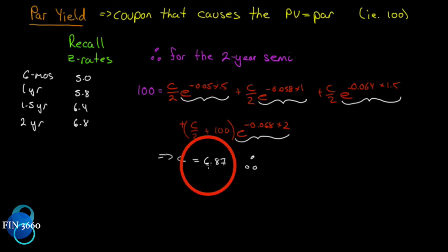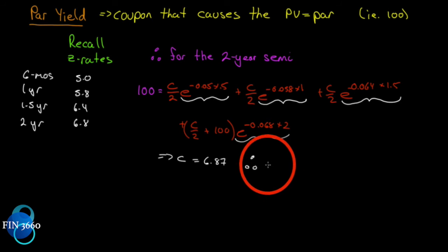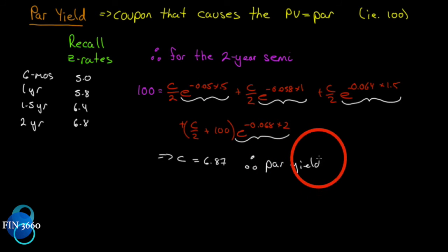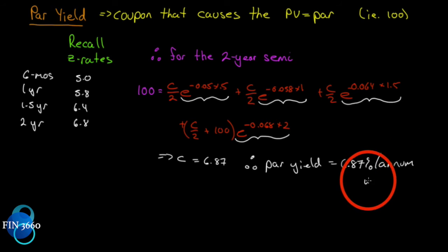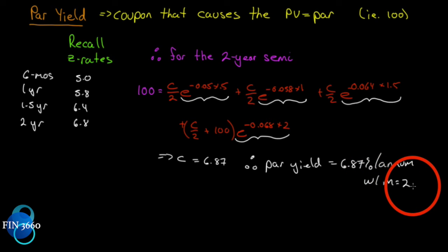So C is 6.87 per year, divided by two for semi-annual. The par yield is 6.87% per annum with m equal to 2. Note that's not continuously compounded — it's 6.87% per annum semi-annual.